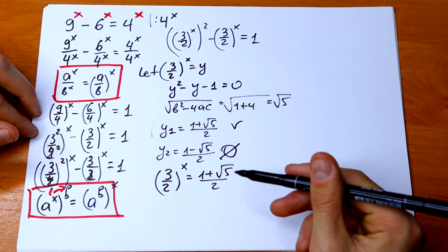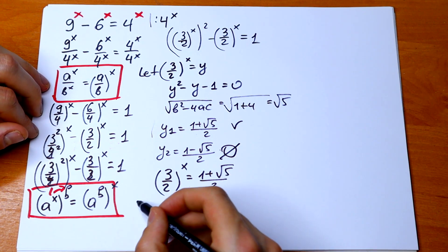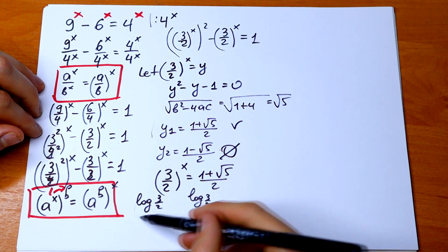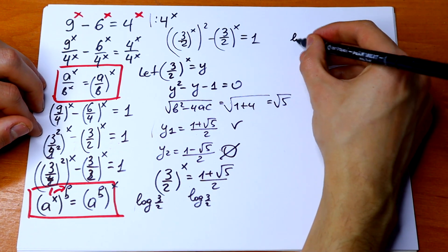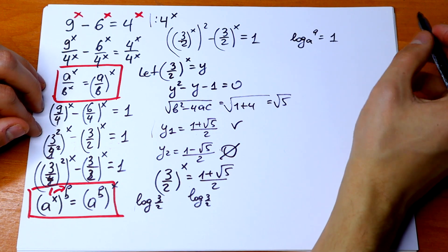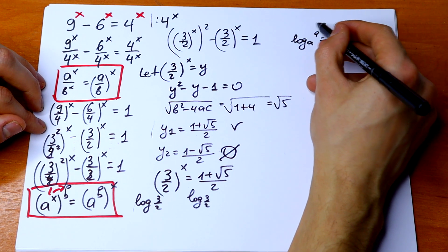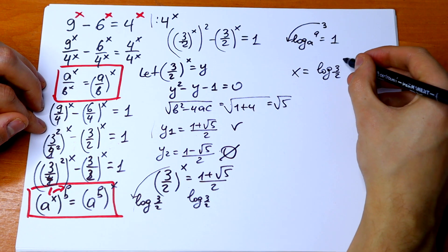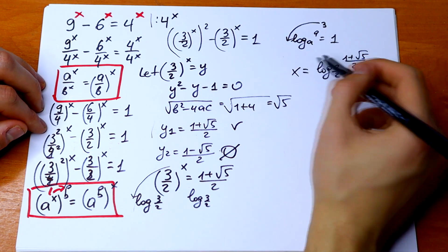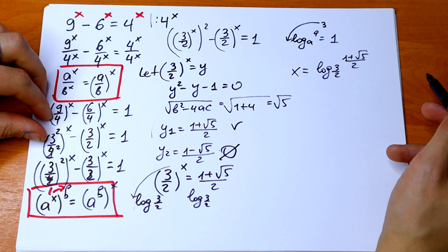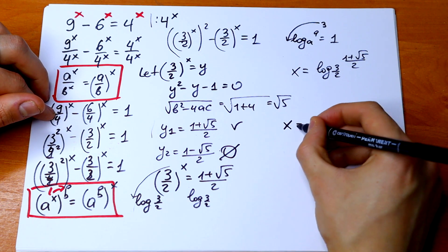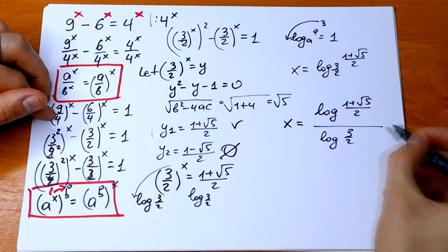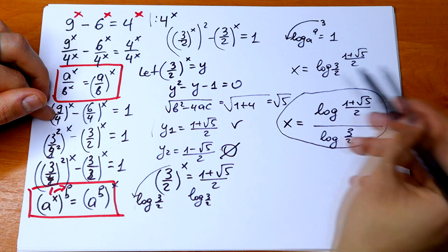To solve this, we take the logarithm of both sides using base 3/2. The left side becomes x, since log base a of a^x equals x. So x equals log base (3/2) of (1 plus square root of 5) over 2. Using the change-of-base property, we can also write this as log((1 + √5)/2) divided by log(3/2), which can be calculated numerically. This is our one and only solution.